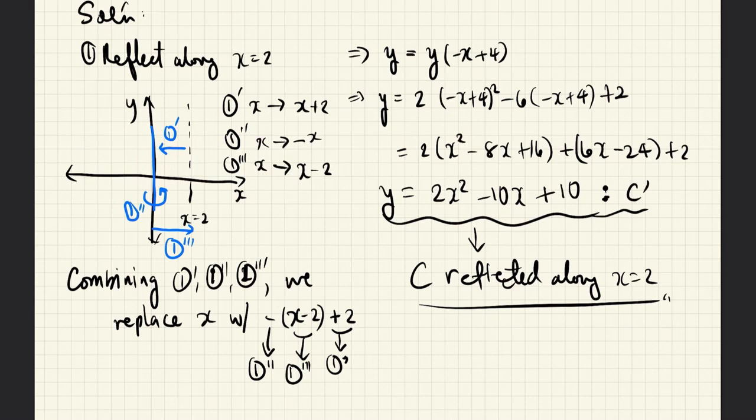We do that by replacing the x's with negative x. And finally, we move the graph back 2 units to the right. We do that by replacing the x's with x minus 2. Combining all these three operations, we see that we have to replace x with this expression.